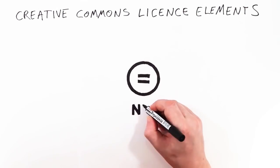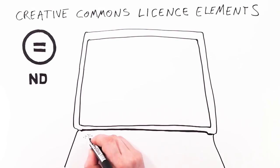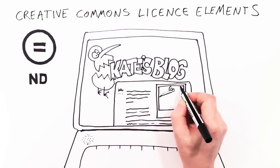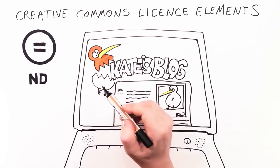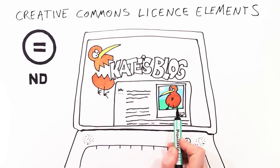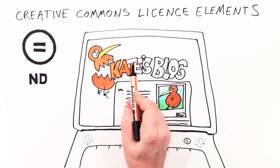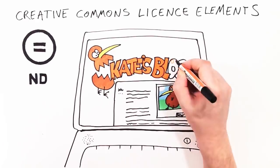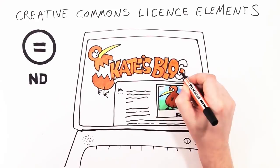This is No Derivatives, and it means that Kiri hasn't given permission to change her photo. Kate can use CC Kiwi on her design blog, but will need to ask Kiri before retouching or mixing up the image.